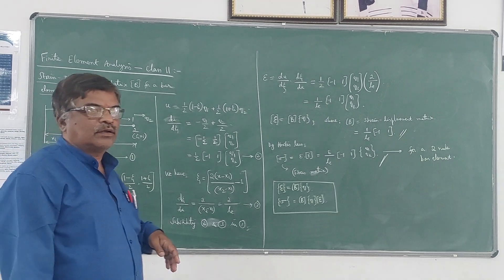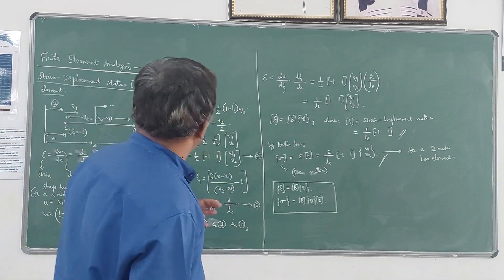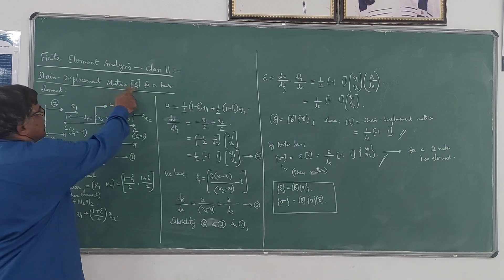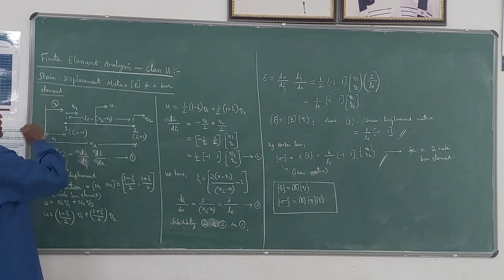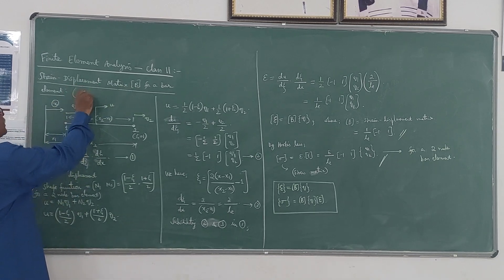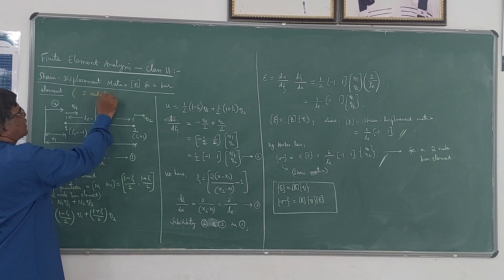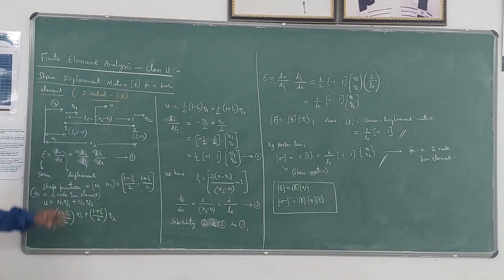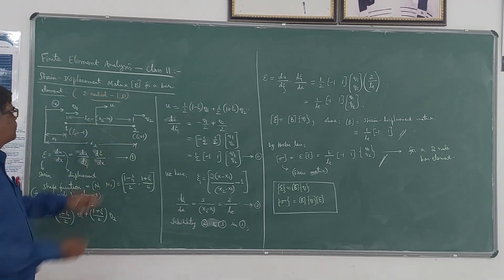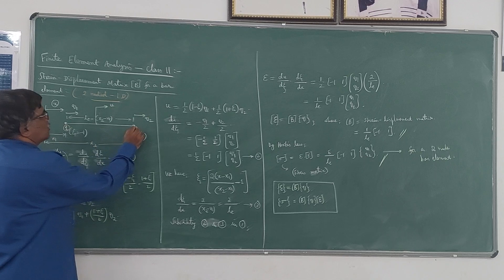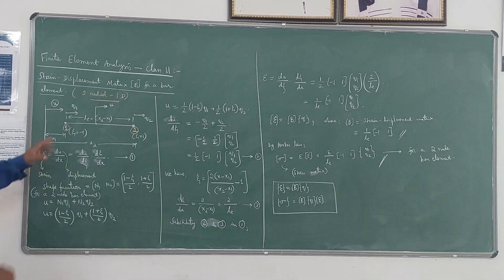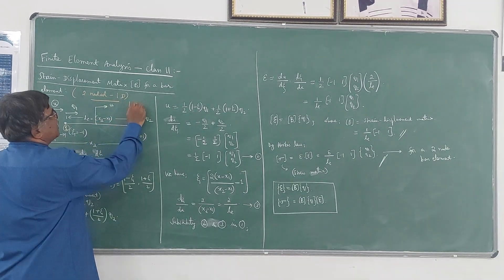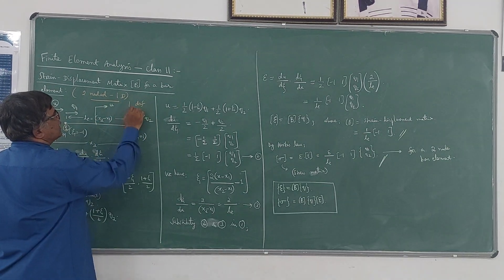In this class we will derive an important matrix called the strain-displacement matrix, denoted by B, for a bar element. We are considering a two-noded, one-dimensional bar element. This element has one degree of freedom at each node end.